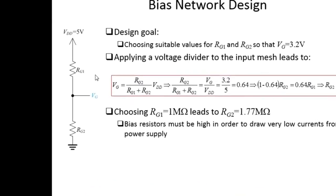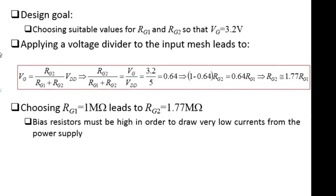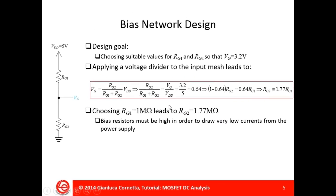The goal is choosing suitable values for resistors RG1 and RG2. Applying a voltage divider on the input mesh leads to a very simple relationship between RG2 and RG1, namely RG2 is equal to 1.77 times RG1. If I choose for RG1 1 megaohm, this leads to RG2 equal to 1.77 megaohms.